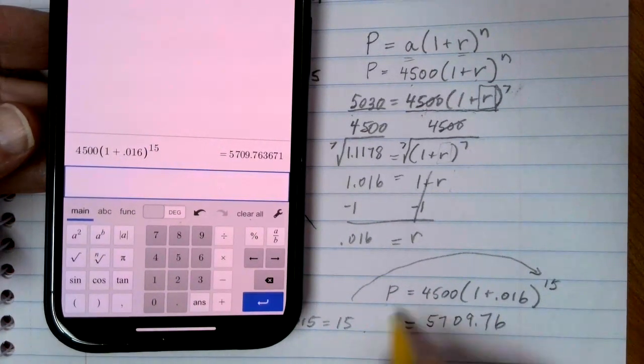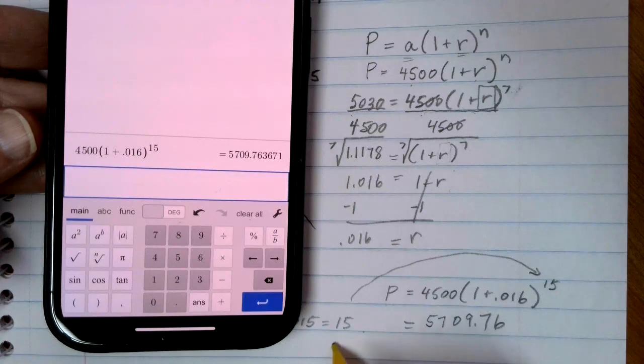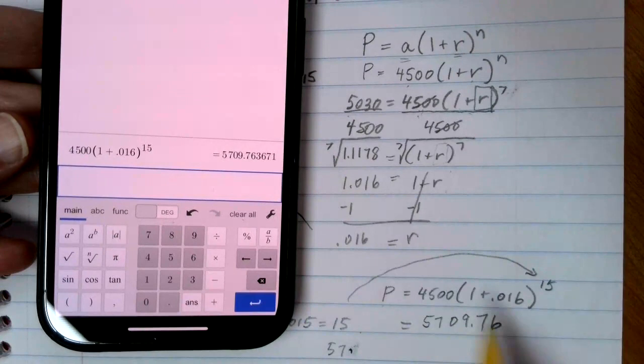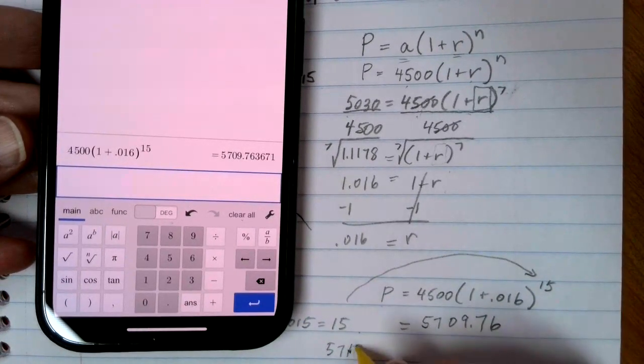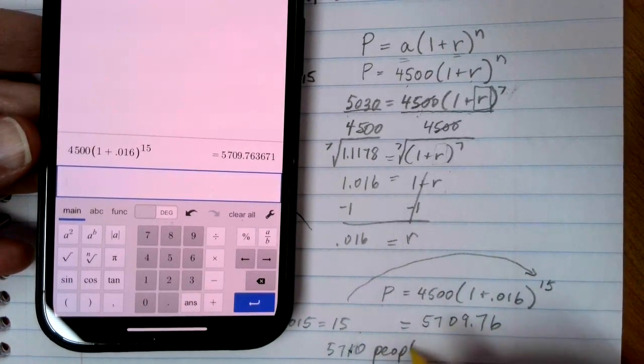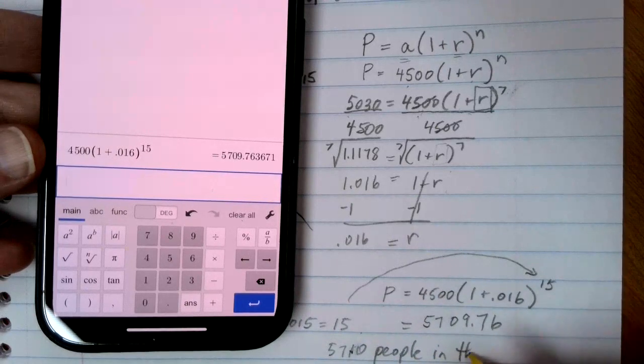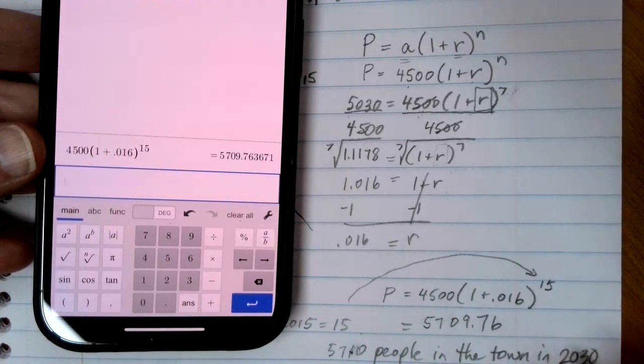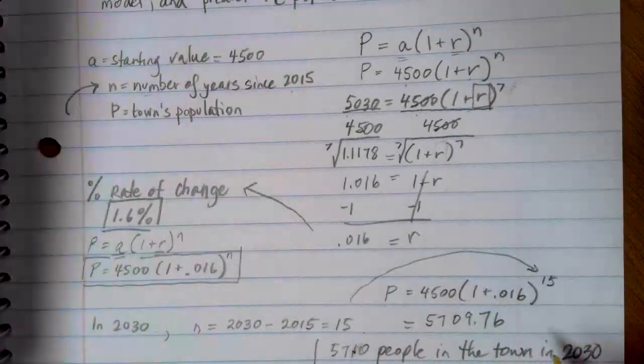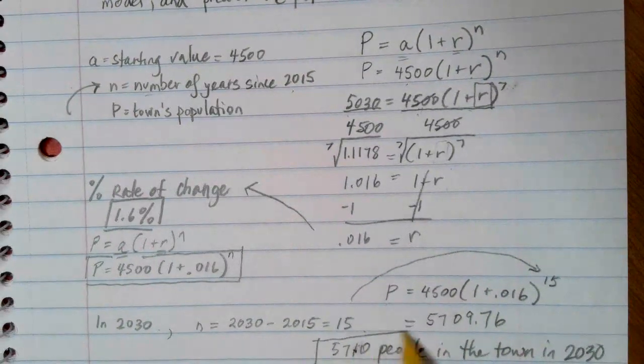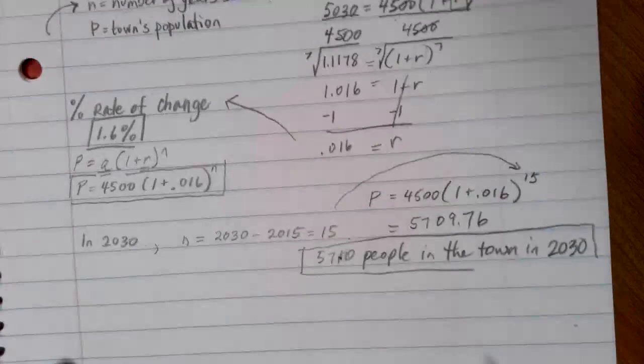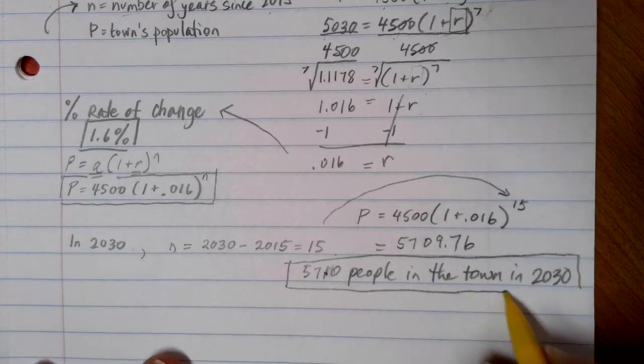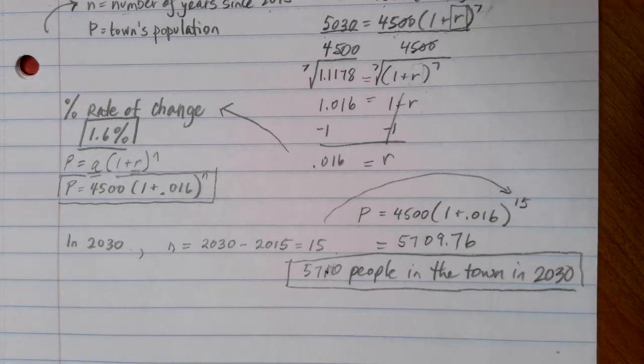We can think of our population as going to be 5,710, because that'll round up that many people in the town in 2030. So if we continue to grow at that 1.6% every year, we'll end up with 5,710 people in the town in 2030.